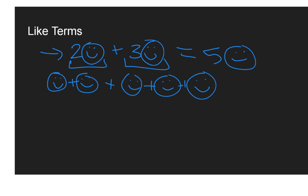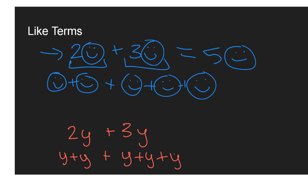Now to think about this in more of an algebraic context, I might have what we call variables — those letters that we see in math sometimes. So if I have something like two y plus three y and I want to simplify that, those are like terms. I could break this down: two y is the same as y plus y, and then I'm adding three y, which is y plus y plus y. How many y's are there total? There are five y's. So when I simplify that expression and combine those like terms, it combines to five y.